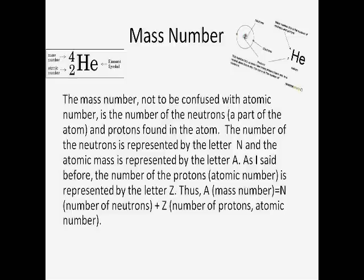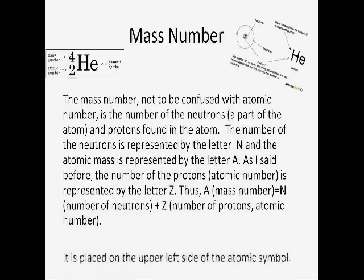As I said before, the number of the protons is represented by the letter Z. Thus, A, the mass number, equals N, the number of neutrons, plus Z, the number of protons, atomic number. It is placed on the upper left side of the atomic symbol.